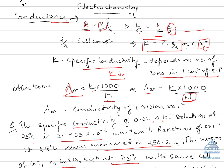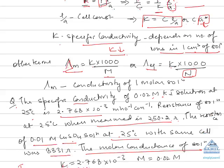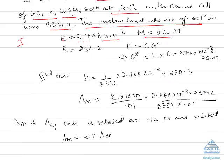Kappa is given as 2.7768 × 10⁻³ and molarity is given. The resistance of the KI solution is also given. Since kappa equals C times G*, we first find the cell constant, which remains constant for any solution. G* equals kappa times R, which equals 2.7768 × 10⁻³ times 2250.2. We then use this G* value in the second case.